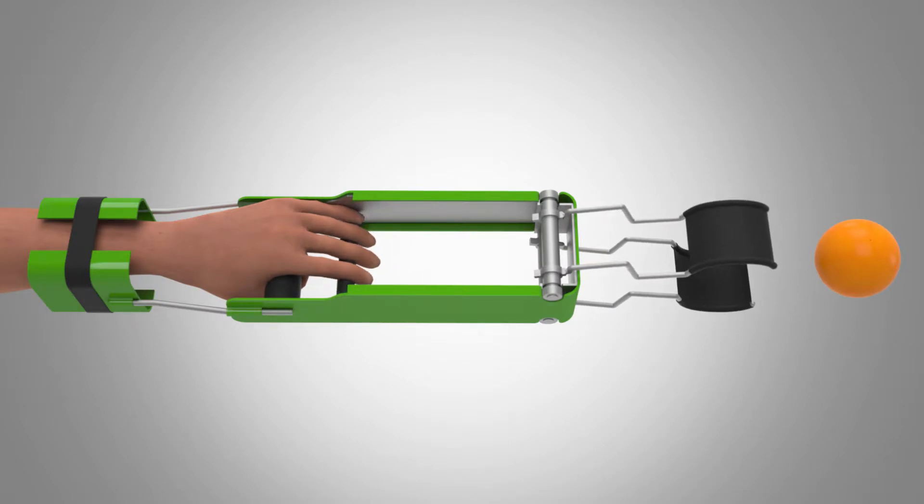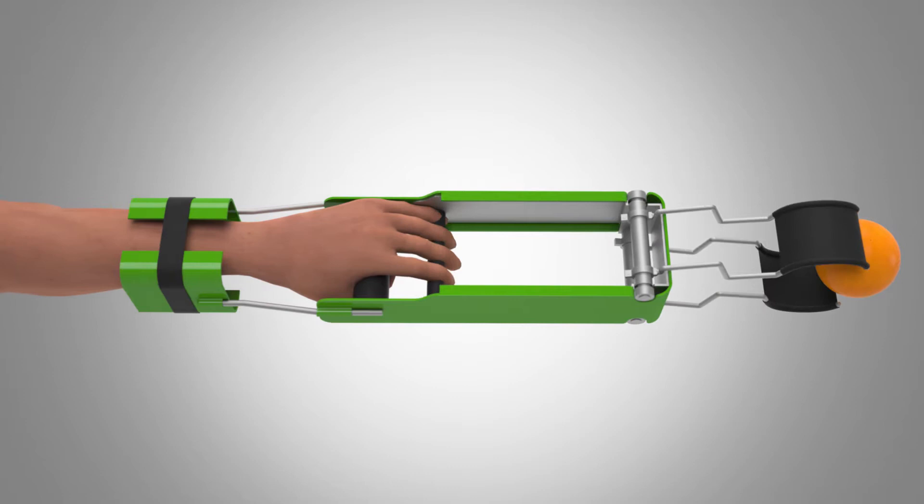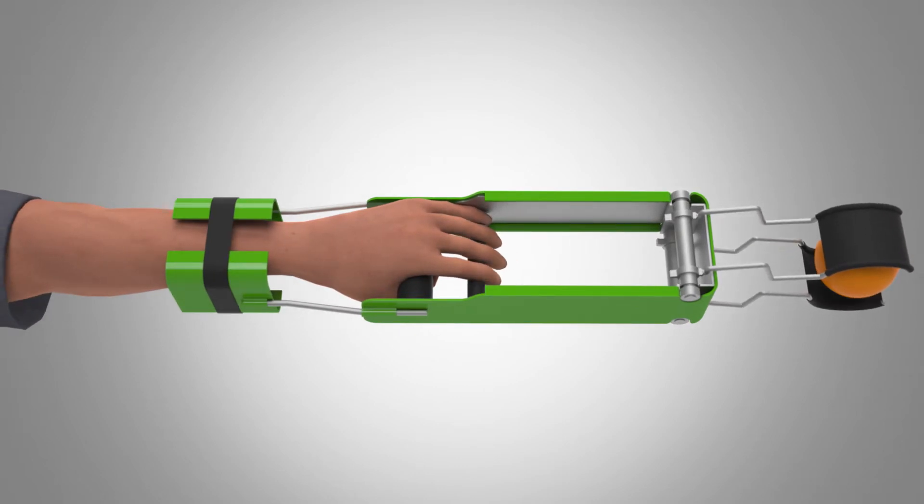It works to distribute the weight of the material across the entire forearm and add stability while keeping the wrist in a neutral position instead of an awkward angle.